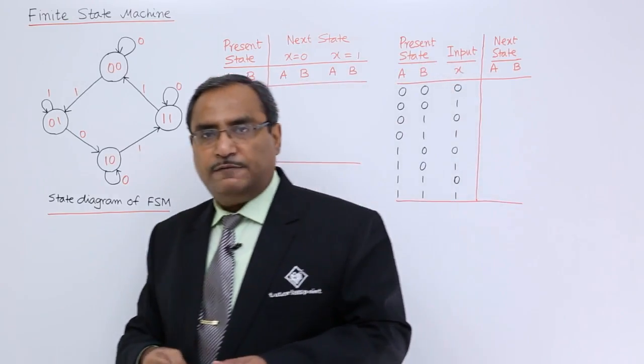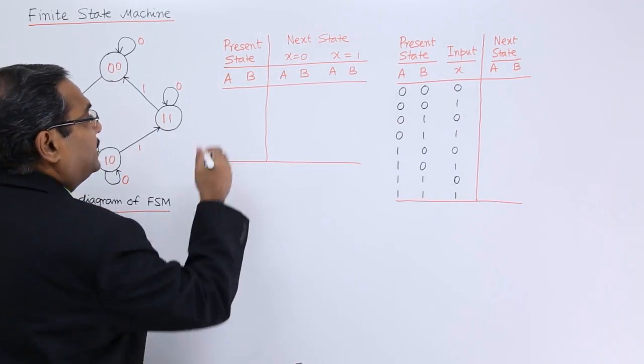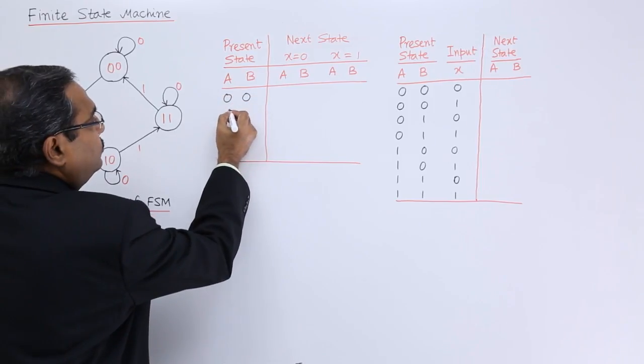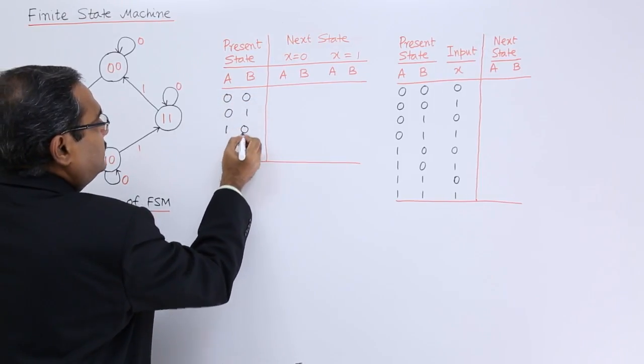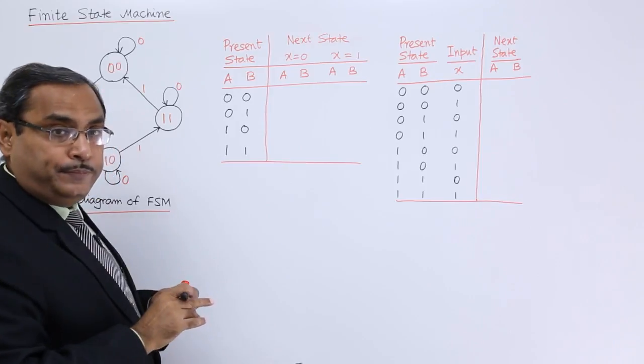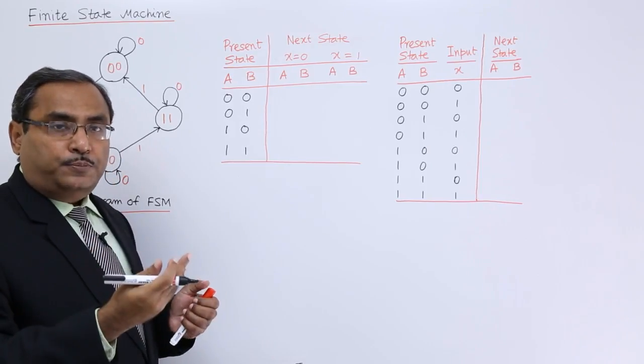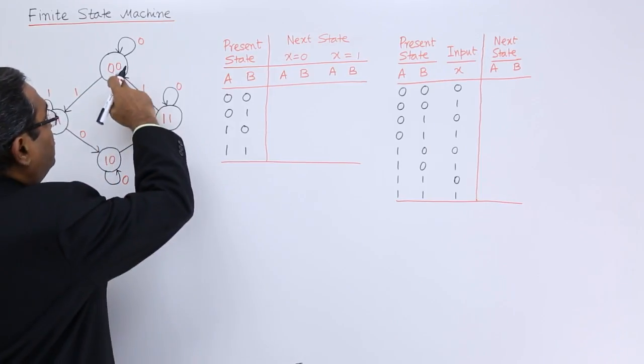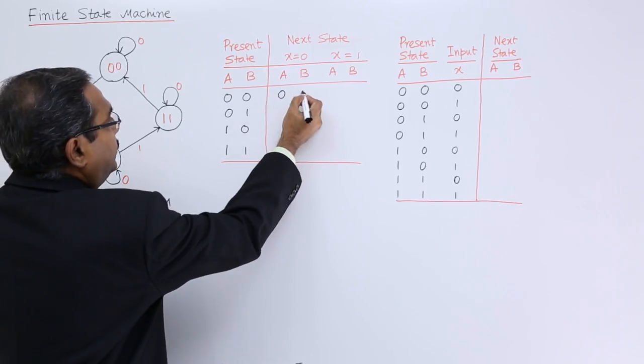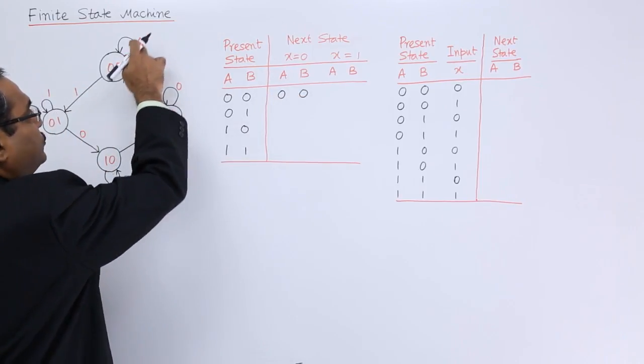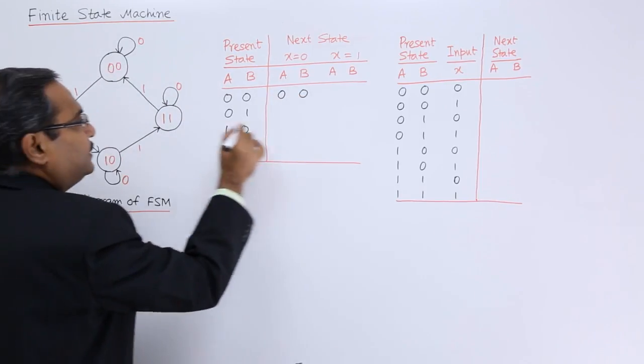Let us complete it at first. We are writing all the present states: 0 0, 0 1, 1 0 and 1 1. Now I shall go for input 0 and input 1. For 0 0 for 0 input, its next state is 0 0, and for 1 it is 0 1.